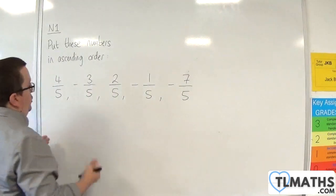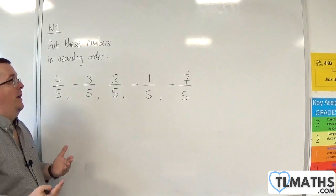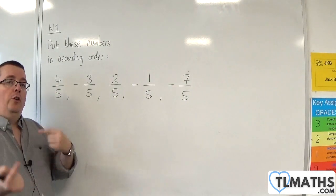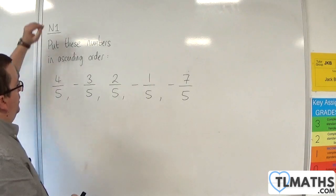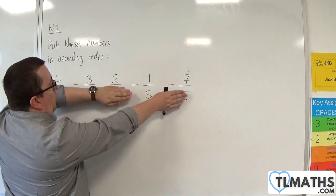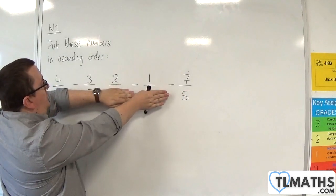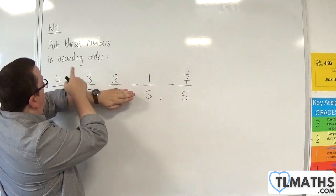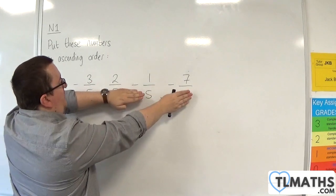So essentially, all we need to do is focus our attention on the numerators. You could essentially cover up all of the 5s and just go, right, I've got 4, -3, 2, -1, and -7.